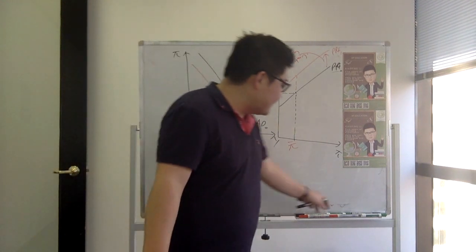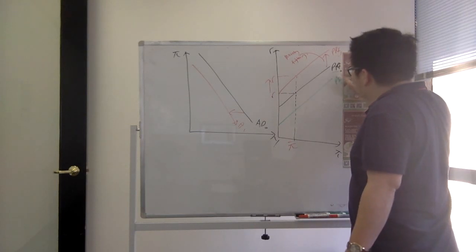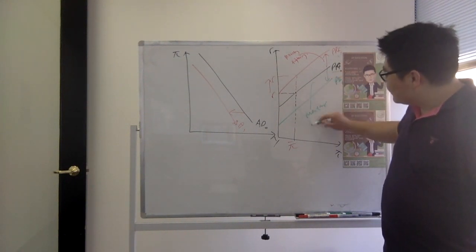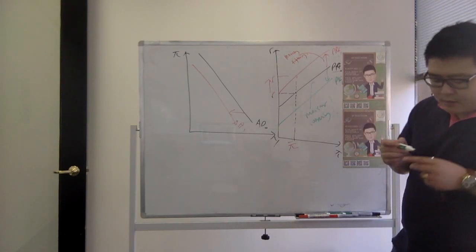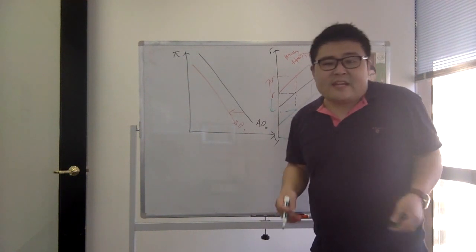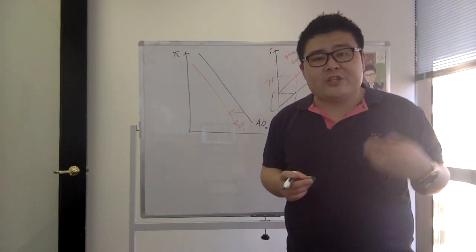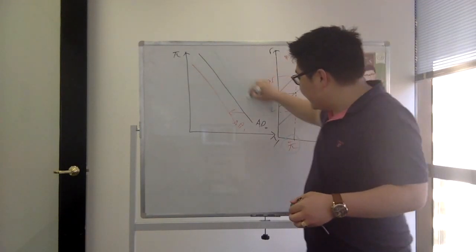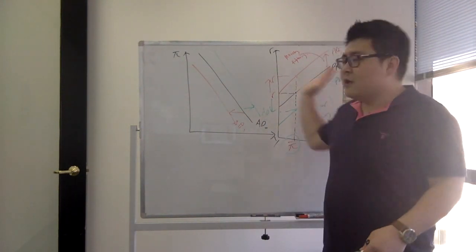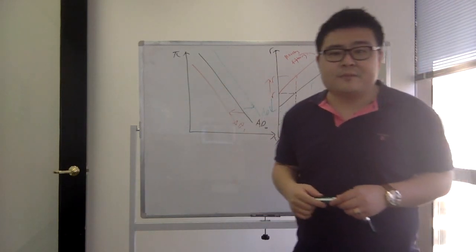What happens if there is a monetary loosening? If there's a monetary loosening, the policy reaction function will shift down to PRF2. If we reduce the real interest rate at any given level of inflation, this provides some sort of stimulation. So whenever we have a monetary loosening, it will shift the AD curve to the right. A monetary loosening corresponds with a rightward shift in the AD curve.